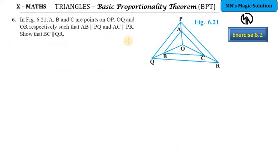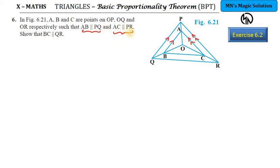Question number 6 from the same exercise. Looking at the problem, it is similar to the previous one. A, B and C are points on OP, OQ, and OR respectively. They say line AB is parallel to PQ, and also AC is parallel to PR — these two parallel conditions have been given. The third condition they have asked us to prove is that BC is parallel to QR. Similar to the previous problem, here as well by converse of BPT we can prove the lines parallel. We have to prove OB by BQ equals OC by CR, and for that we will use the common ratio OA by AP.